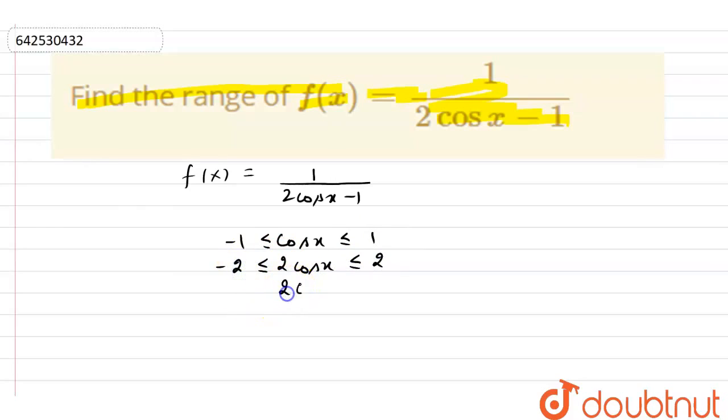Now, if I subtract 1 from this, we'll get 2 minus 1, that is 1, and minus 2 minus 1, that is minus 3. So if I reciprocate it, we have 2 cos x minus 1. On reciprocation...